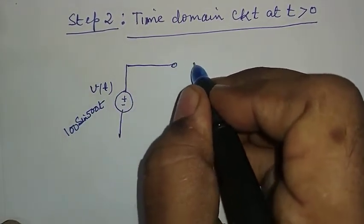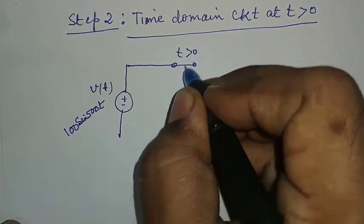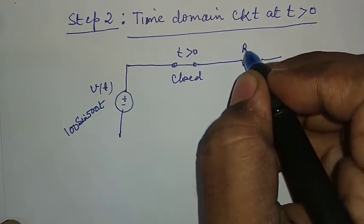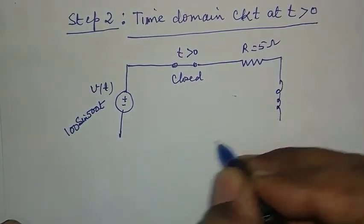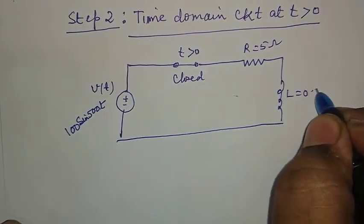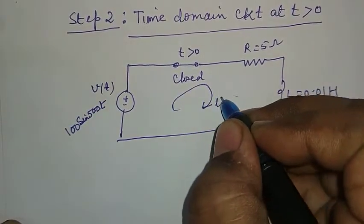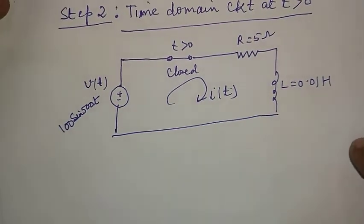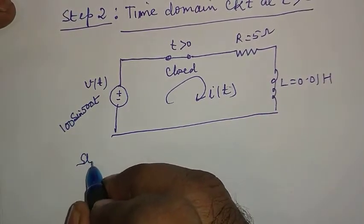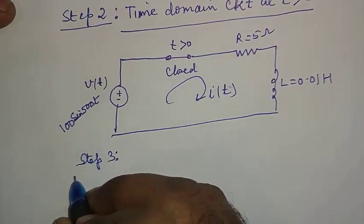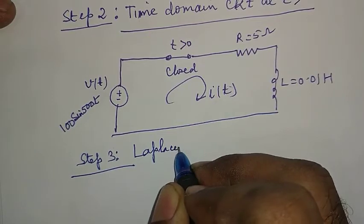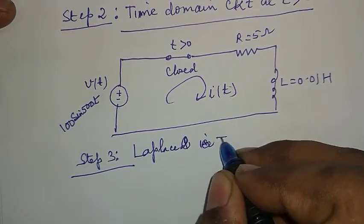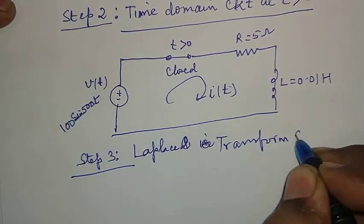At t greater than 0, the switch will be closed. There is resistance R equal to 5 ohms and an inductor of 0.01 Henry, and the current is I(t). So this is the time domain circuit at t greater than 0. From this circuit, in the next step, we obtain the Laplace equivalent circuit, which is asked in the question.